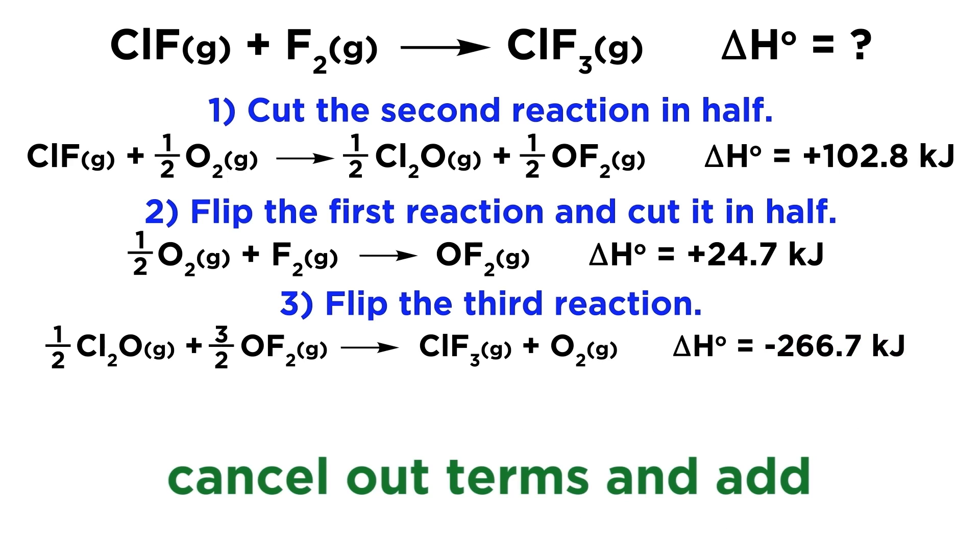And that's all we need from our given information. We can now just cancel out all the terms that are able to cancel, and then add all the equations together. Now on the left we have one half O2 in the first equation, and one half O2 in the second equation, for a total of one O2 on the left. We also have one O2 on the right, so those cancel out. We also have one half Cl2O on both sides, so that will cancel out. In addition on the left we have three halves OF2, while on the right the first equation has one half OF2, and the second equation has OF2, which add up to three halves OF2, so those all cancel out as well.